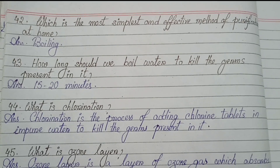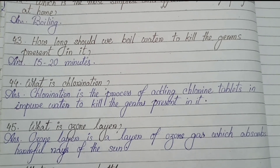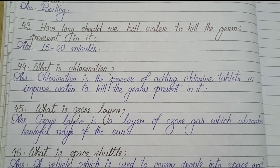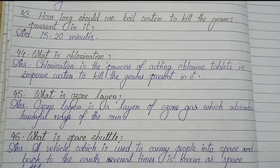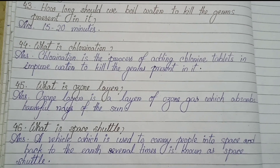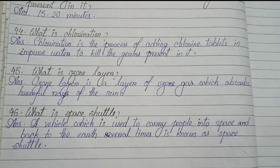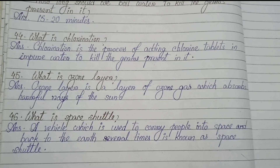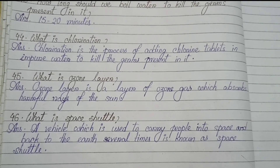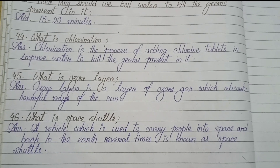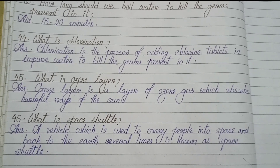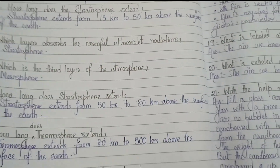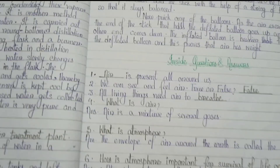Number 42: Which is the most simplest and effective method of purification at home? Boiling. Number 43: How long should we boil water to kill the germs present in it? 15 to 20 minutes. Number 44: What is chlorination? Chlorination is the process of adding chlorine tablet in impure water to kill the germs present in it. Number 45: What is ozone layer? Ozone layer is a layer of ozone gas which absorbs harmful rays of the sun. Number 46: What is a space shuttle? A vehicle which is used to carry people into space and back to the earth several times is known as a space shuttle.